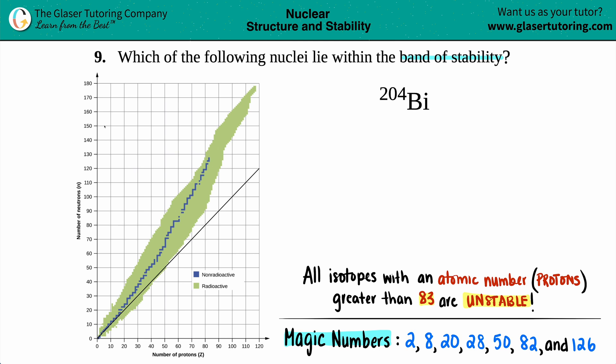Anytime that you want to find out if an isotope or an atom is going to be in the band of stability, aka it's going to be stable or not, always find out your number of protons and your neutrons.